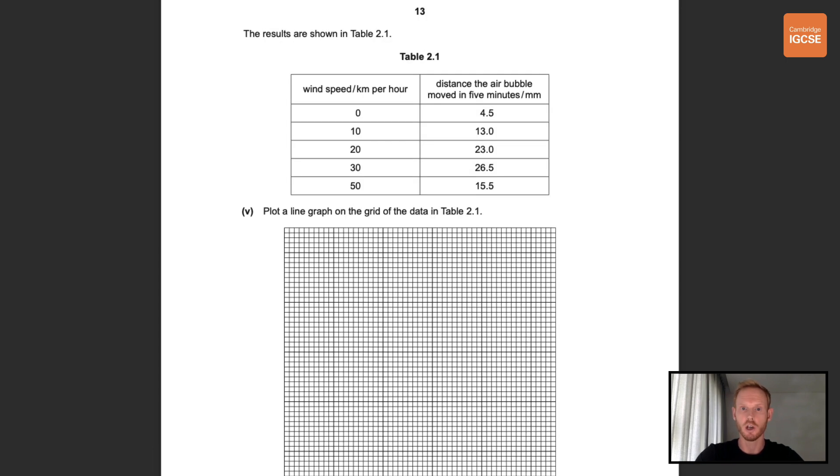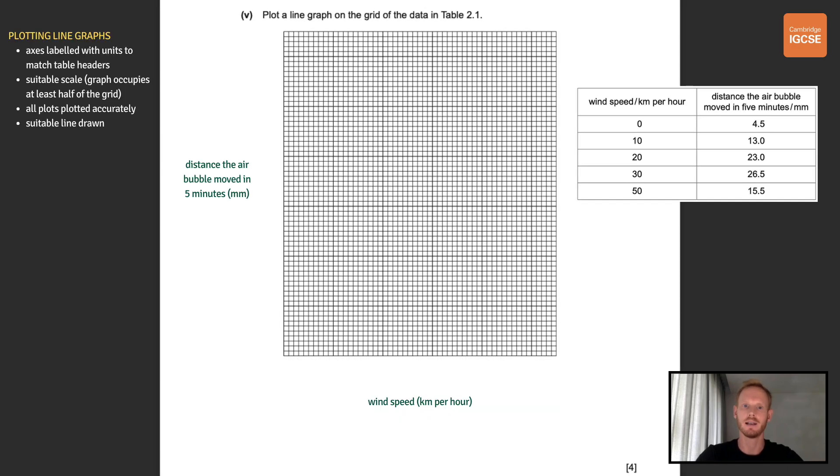Now the results of this experiment are shown in table 2.1. Plot a line graph on the grid of the data in table 2.1. When drawing graphs you need to: a, label the axes with units to match the table headers, so in this case wind speed in kilometers an hour, our independent variable on the x-axis, and distance moved in five minutes in millimeters, the dependent variable on the y-axis. b, you need to make sure that you use a suitable scale and that your graph occupies at least half of the grid in both directions. c, accurately plot your points and they give you a margin of error of plus or minus half a small square and d, draw a suitable line connecting the points.